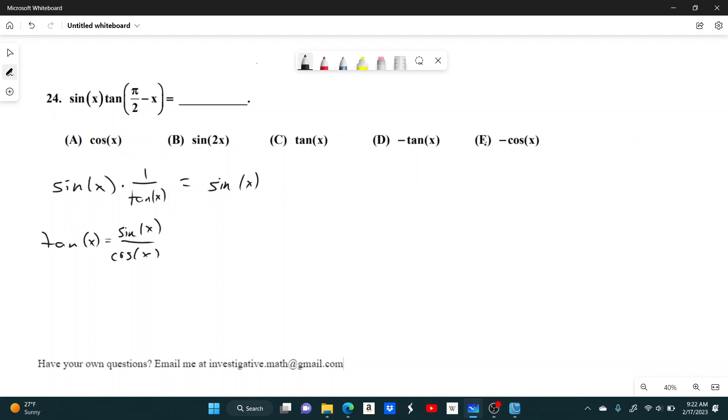And so here we're multiplying by the reciprocal. So I can just say, instead of multiplying by sine over cosine, I multiply by cosine over sine. When I do that, sine of x cancels, and you're just left with cosine of x. And that's answer choice A.